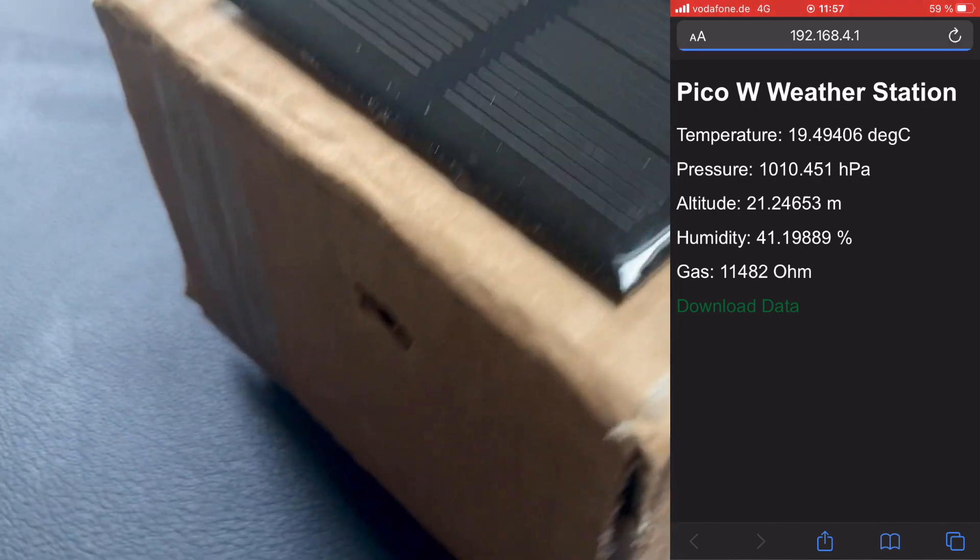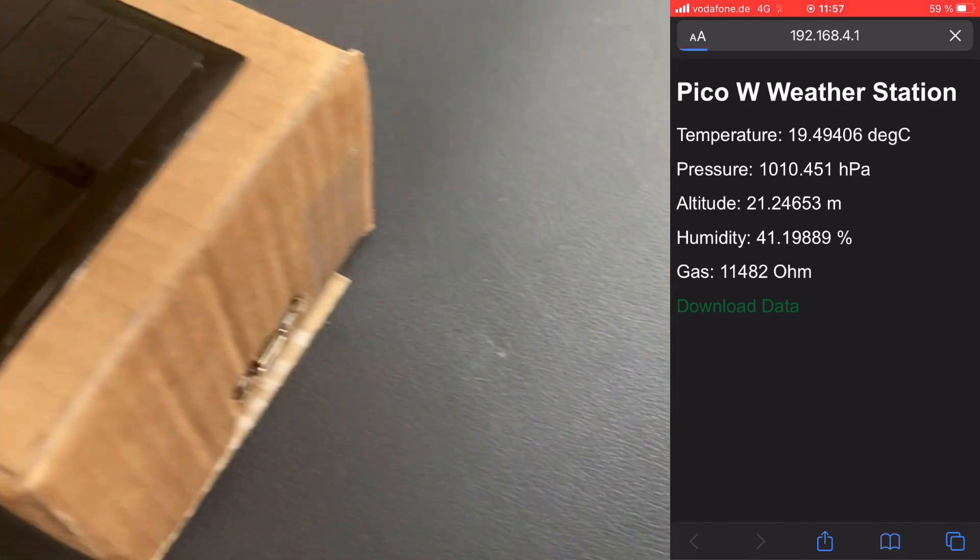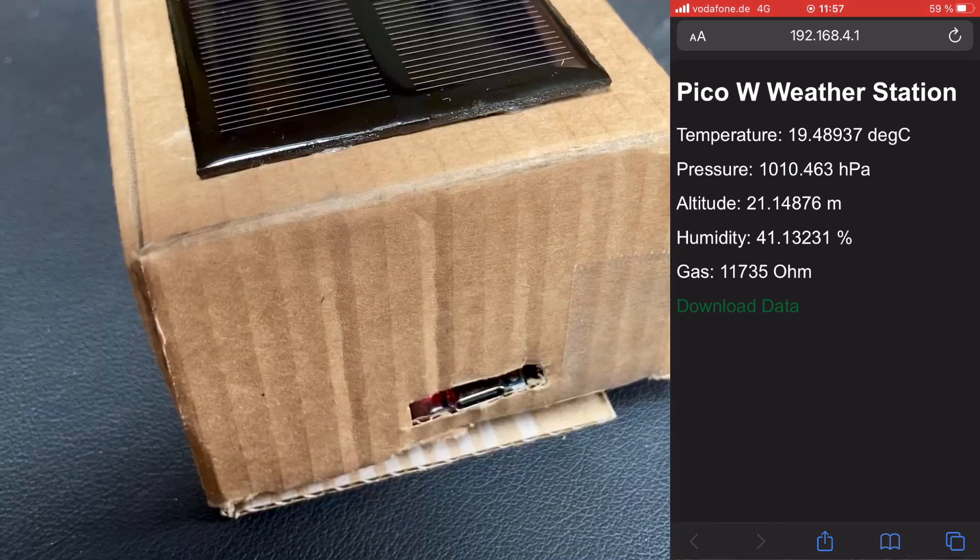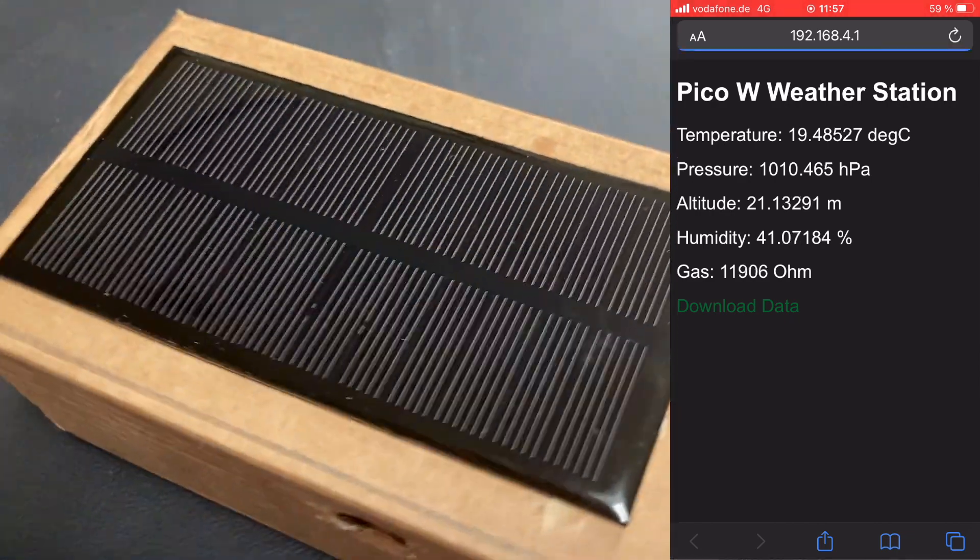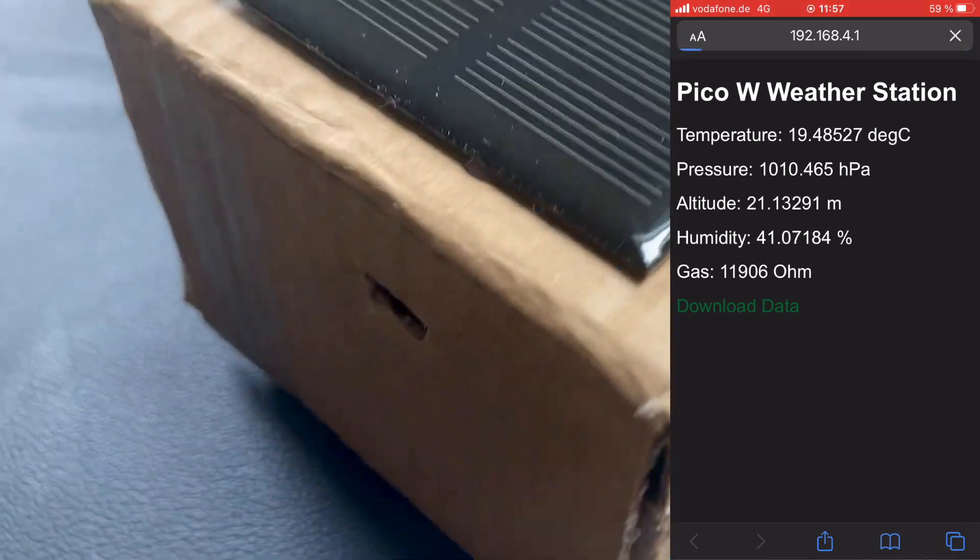If you are connected to the Pico W's wireless network, open your browser and copy in the Pico W's IP address. You should see all the measurement values and it should update every three seconds.